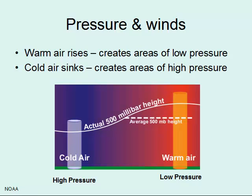Some of the basics from the previous video: warm air rises because it is less dense, and as it rises, it produces a surface low pressure below that warm air on the Earth's surface. Cold air is more dense and wants to sink, causing the surface underneath that cold air to have high pressure.